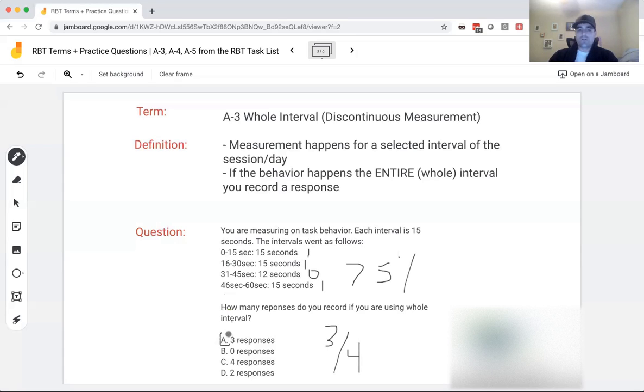So whole interval tends to underestimate data, right? Because remember, the behavior happened quite a bit, even in this third interval, but because it didn't happen the entire time, it doesn't count. So we're underestimating how often the behavior occurs. Discontinuous measurement is less accurate than continuous measurement, because you're only getting a sample of the data.